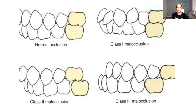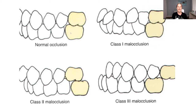So we look at the first molar: the mesial buccal cusp of the upper first molar should sit into the groove of the first molar on the bottom. That's the easiest way of thinking about it — that was always easy for me to memorize. You might have learned it a different way in school, but I feel that is the easiest way.